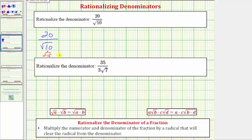Which means to rationalize the denominator, we multiply the numerator and denominator by the square root of 10. Multiplying the numerator, notice how we have 20 times square root of 10, which is 20 square root of 10.